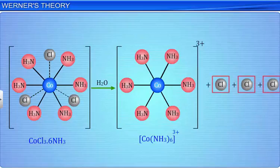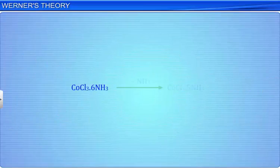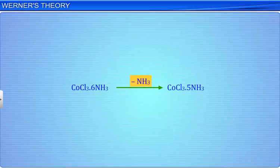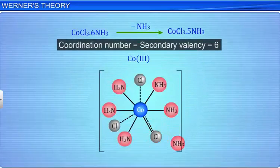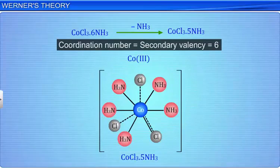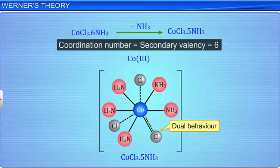Werner deduced that the loss of 1 ammonia molecule from CoCl3·6NH3 should give CoCl3·5NH3. This complex has only 5 ammonia molecules. Therefore, to satisfy the coordination number of 6 of cobalt, 1 chloride ion assumes dual behavior. That is, it satisfies the primary as well as the secondary valency of cobalt.